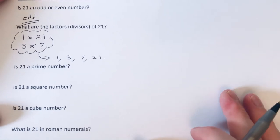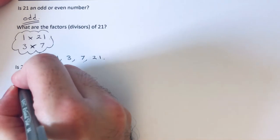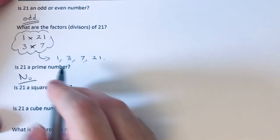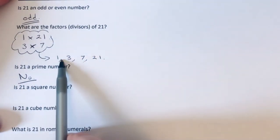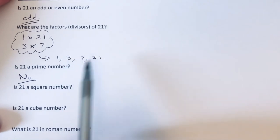Our next question: is 21 a prime number? Well, the answer is no because a prime number has 2 factors and 21 has 4 factors.